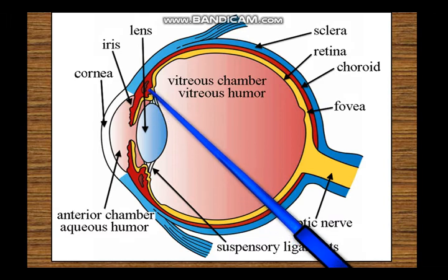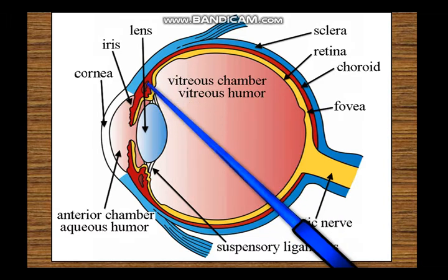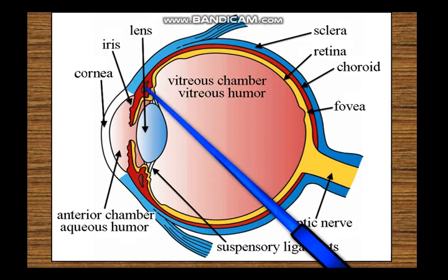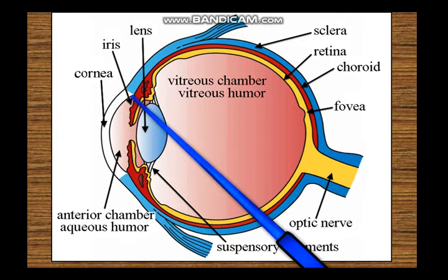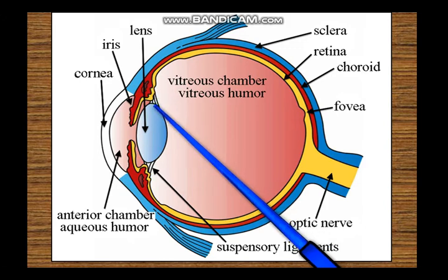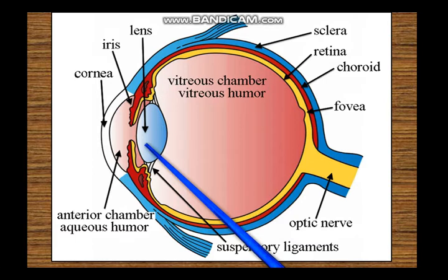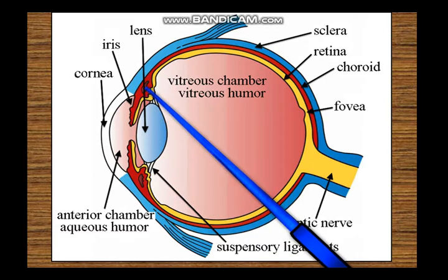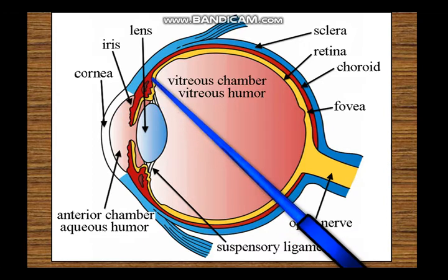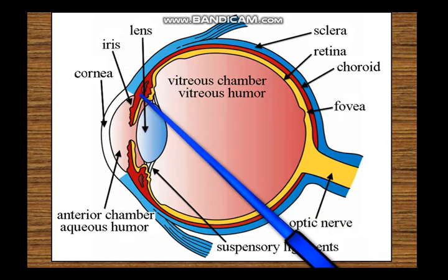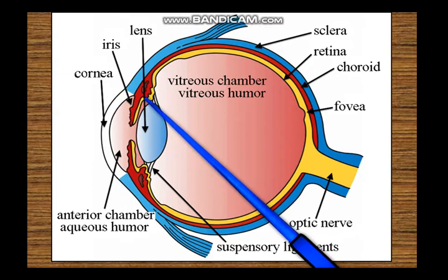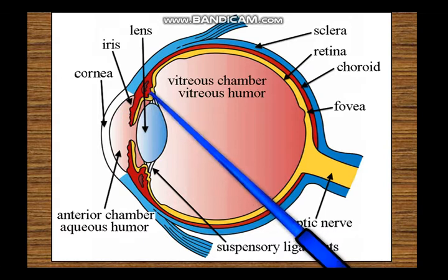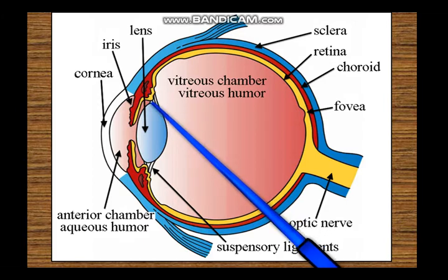The ciliary body has several functions: it gives support to the suspensory ligament of the lens, it is responsible for secreting aqueous humor, and it contains the ciliary muscles. The aqueous humor secreted by the ciliary body passes from the posterior chamber through the pupillary aperture into the anterior chamber, where it is absorbed at the sclerocorneal junction. The ciliary body is roughly triangular — apex behind, base in front. The posterior smooth part is the pars plana and the anterior corrugated part is the pars plicata.